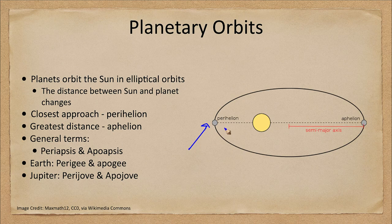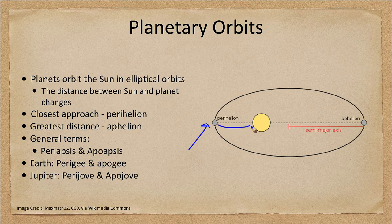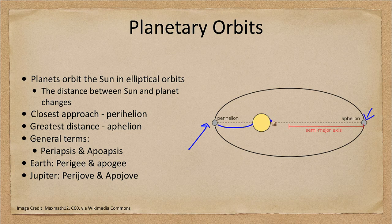That is perihelion, when the distance between the planet and sun is the least. Aphelion over here is when they are the greatest. That's the largest distance.